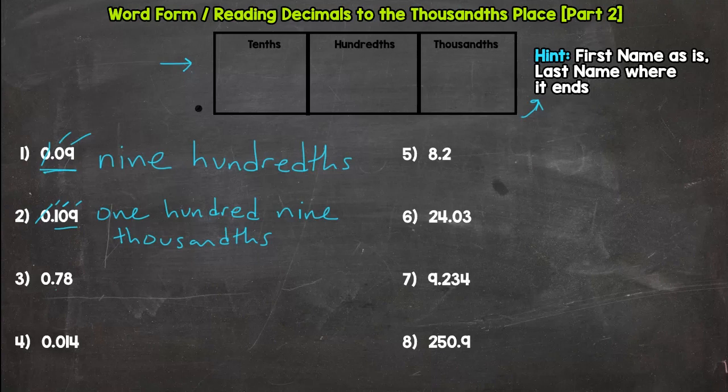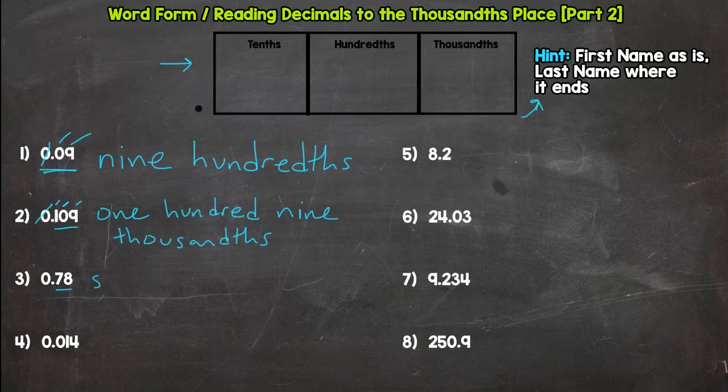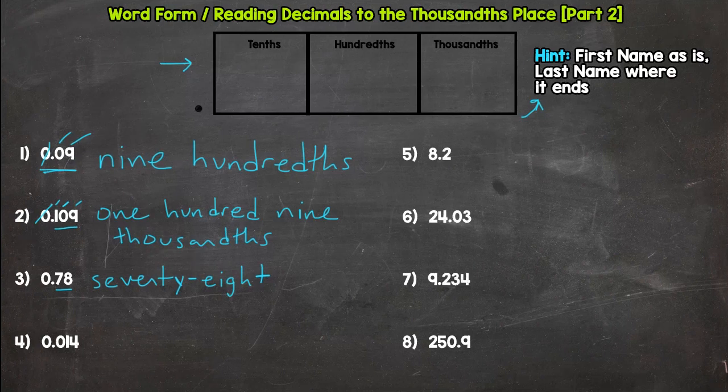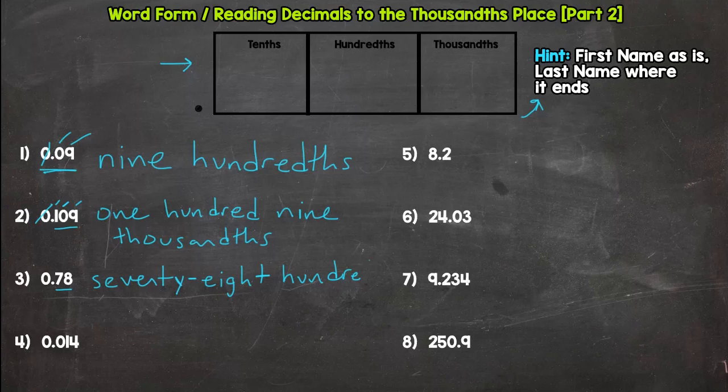Number three. As is. Seventy. Eight. And think about its last name. Where does it end? Hopefully you said hundredths. Seventy-eight hundredths.